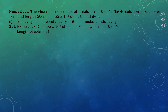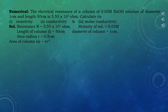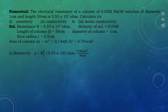Length of the column is 50 cm and diameter is 1 cm, so radius equals 0.5 cm. Using the formula for area of a circular cross-section, A equals πr², which gives A equals 0.785 cm². Now calculate resistivity using ρ equals RA/L: with R equals 5.55 × 10³ Ohm, A equals 0.785 cm², and L equals 50 cm, ρ comes out to be 87.135 Ohm·cm.